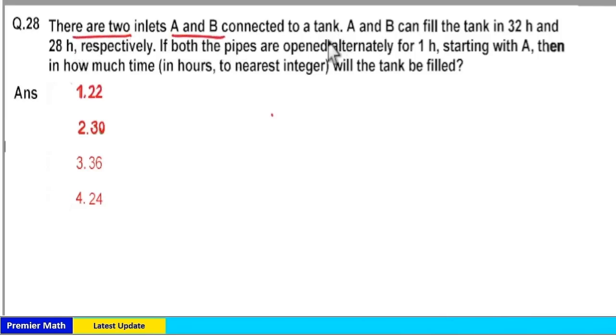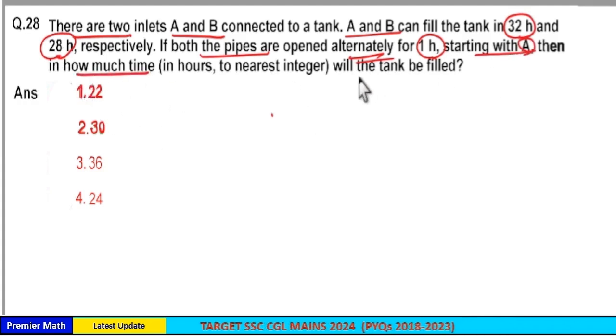There are two inlets A and B connected to a tank. A and B can fill the tank in 32 hours and 28 hours respectively. If both pipes are open alternately for 1 hour starting with A, then in how much time will the tank be filled? Here A can fill the tank in 32 hours and B can fill it in 28 hours.